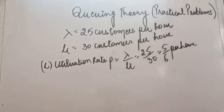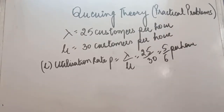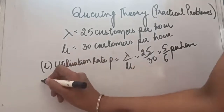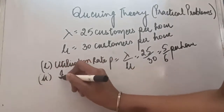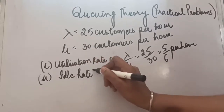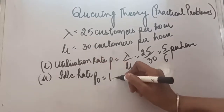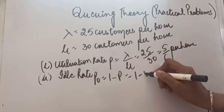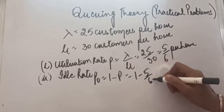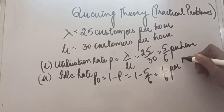We can convert the utilization rate into a percentage by multiplying by 100. Second, we find the idle rate, P0, which is 1 minus p. So it is 1 minus 5 by 6, which comes out to be 1 upon 6 per hour.